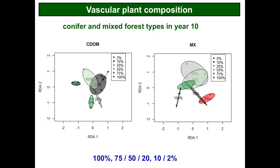Looking at composition — these ordination graphs analyze community composition using which species were found and their relative abundances. It's a multivariate dataset allowing us to look at relationships between different treatments in terms of overall community composition. The bubbles represent the space in which you'd find the plots for a particular treatment. Bubbles closer together indicate those treatments had more similar composition in terms of the overall plant community; ones farther away means they were more different from one another.